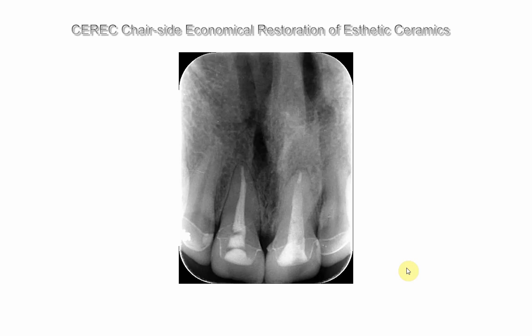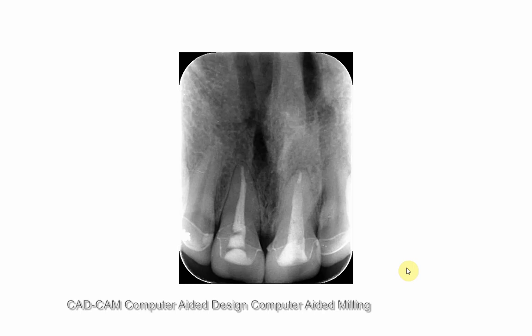The only crowns that you can see radiographically — not clinically — are the CEREC crowns. These are CAD-CAM constructed crowns, and they are the only crowns that allow you to view the tooth structure underneath, because of their reduced radio-opacity. All other crowns vary in their radio-opacity, but none of them allow you to see the crown underneath — only the CEREC crowns, which are made chairside by CAD-CAM technology.